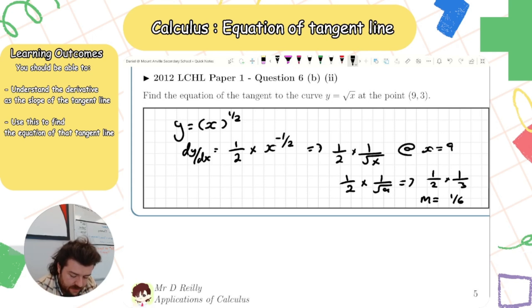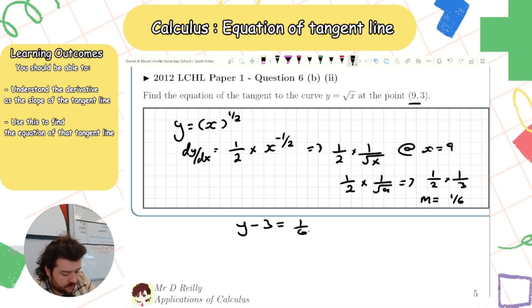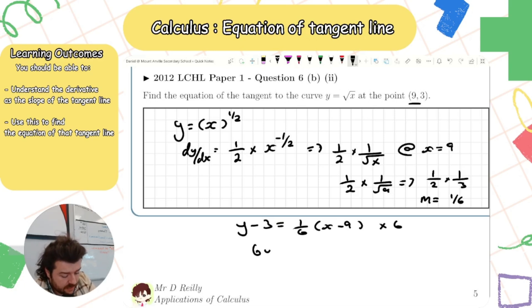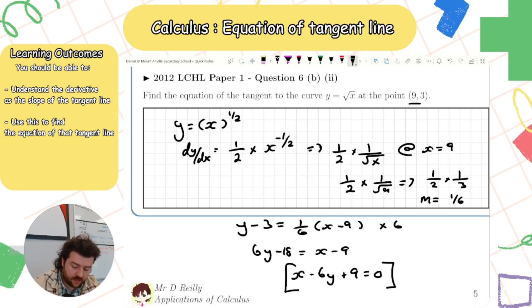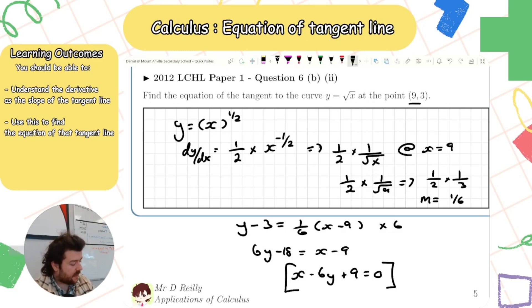My slope is 1/6 and my point is (9, 3). So: y − 3 = (1/6)(x − 9). Multiplying through by 6: 6y − 18 = x − 9, which rearranges to x − 6y + 9 = 0. That's the equation of the tangent.